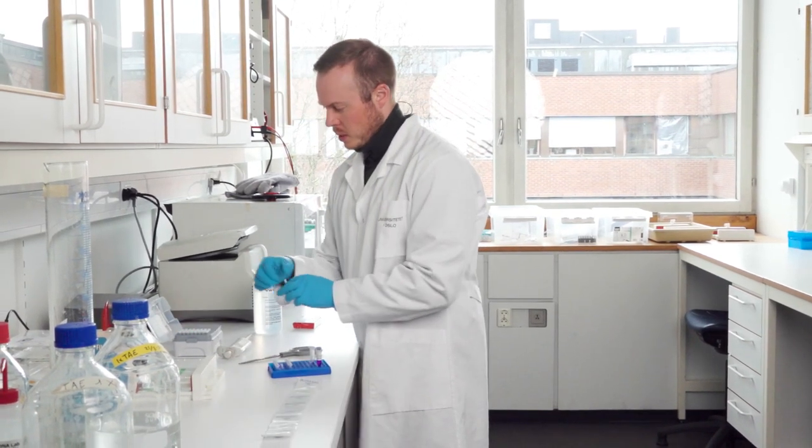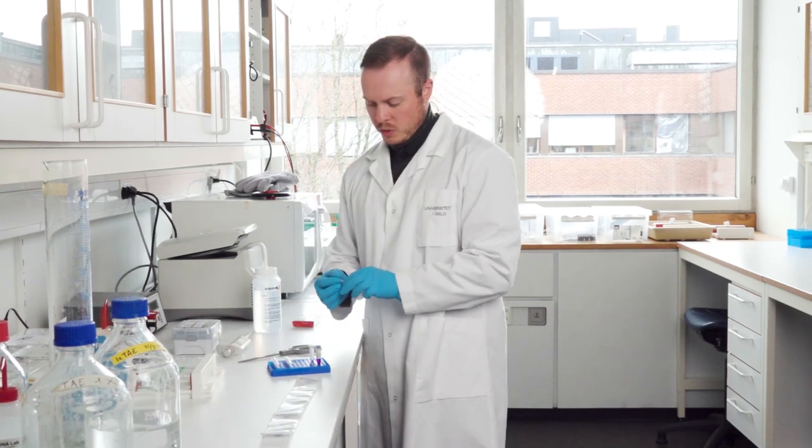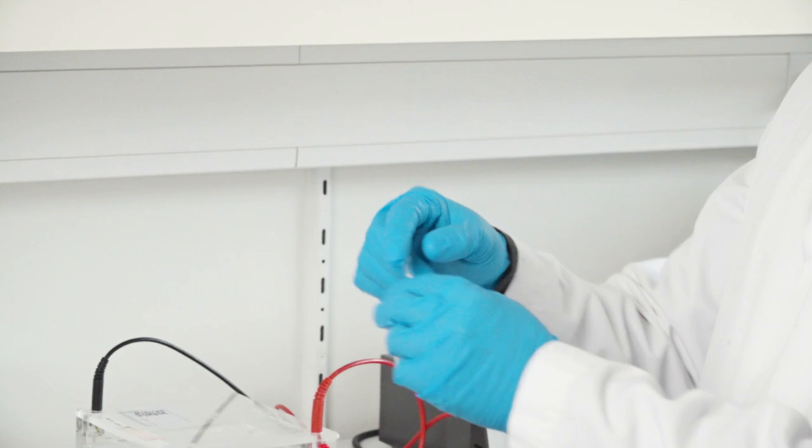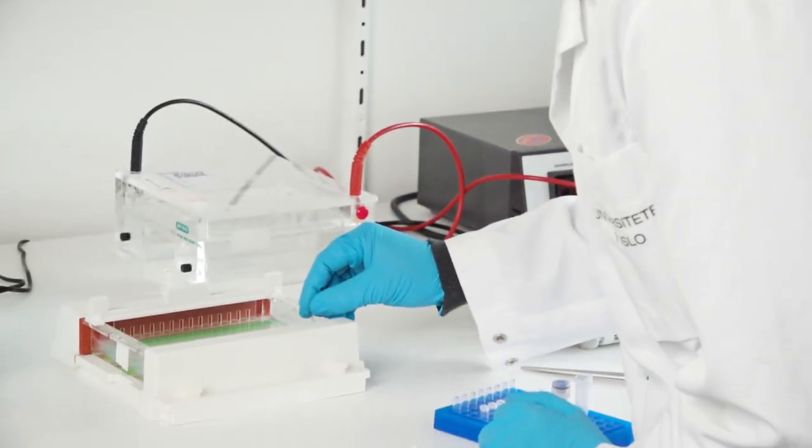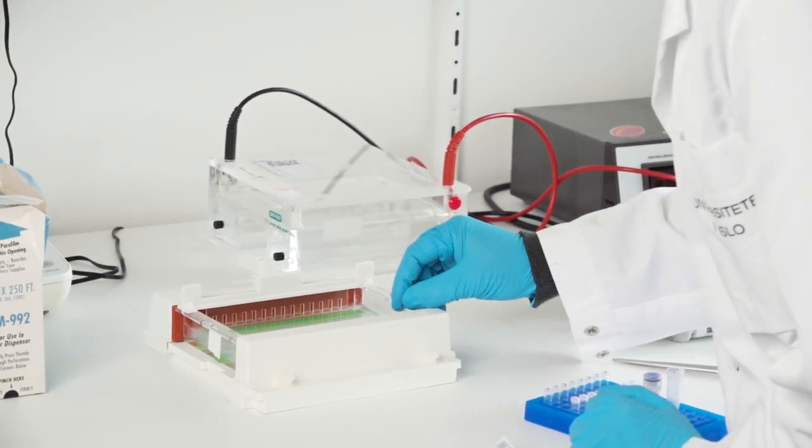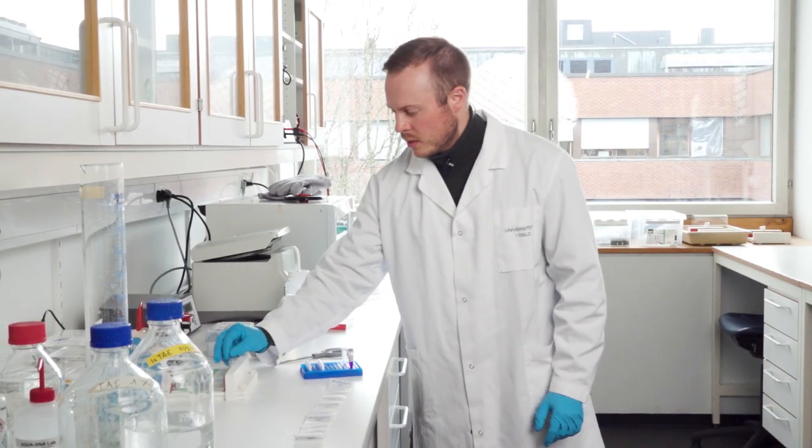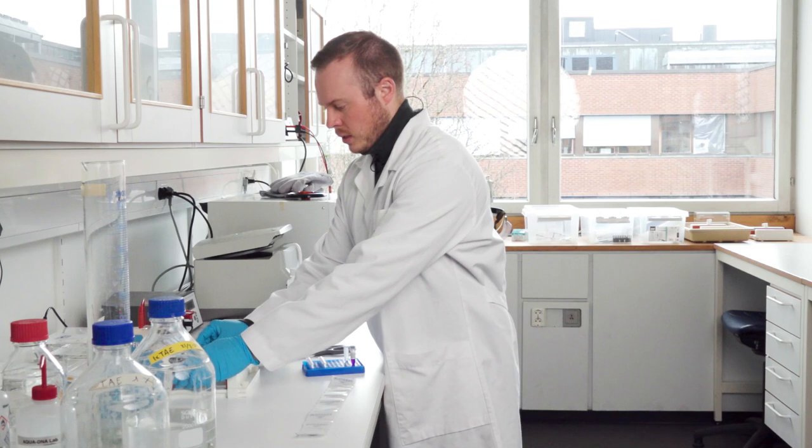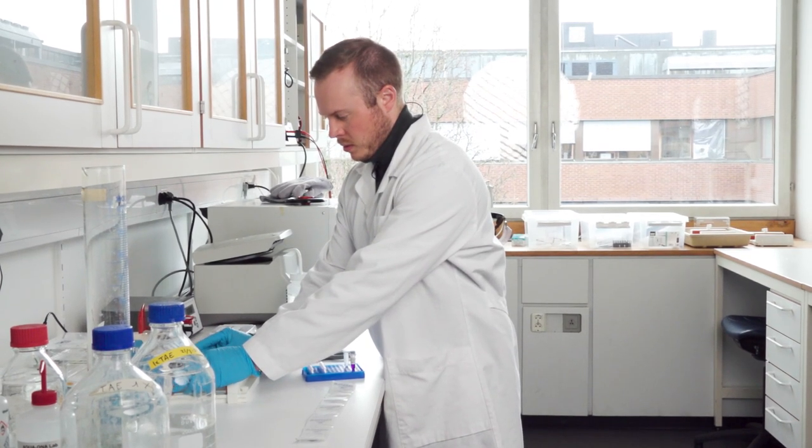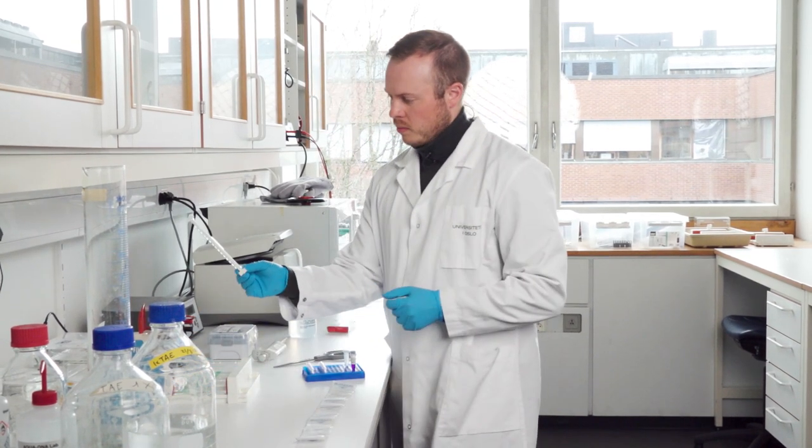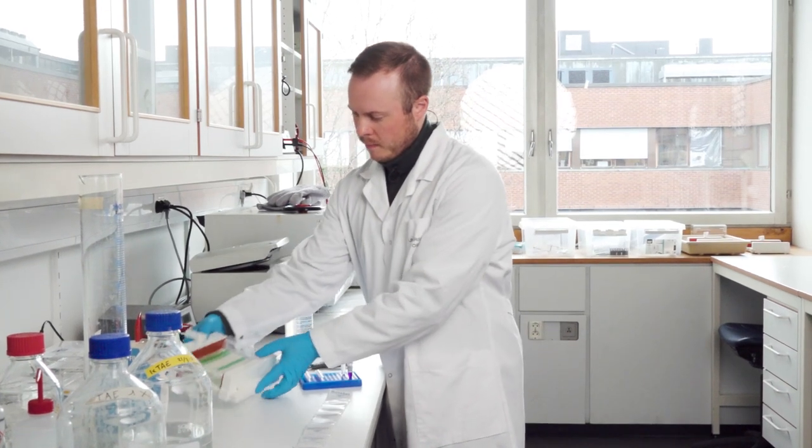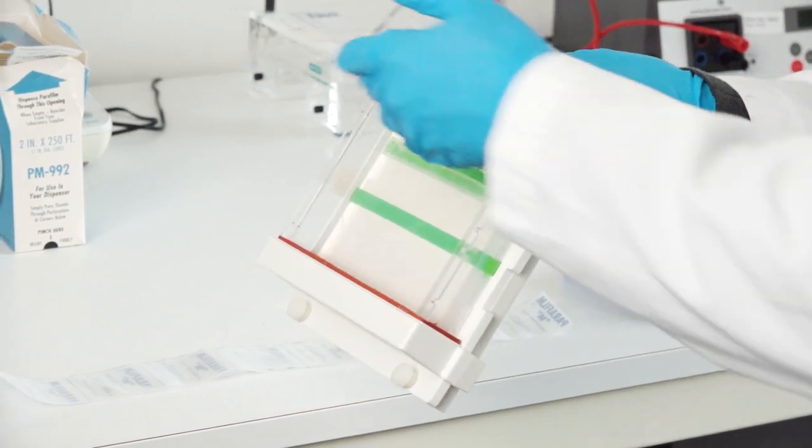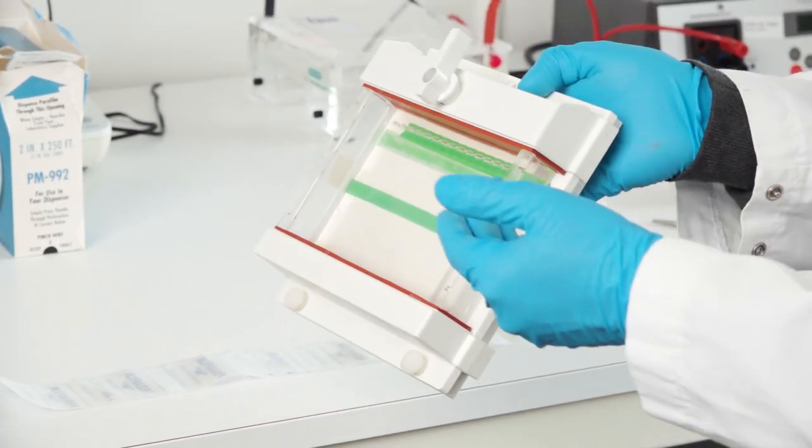Then I take a pipette tip and then I use not the pointy end of the pipette tip but the blunt end of the pipette tip to check the gel. And now I feel that it's hard. It's not a lot of pressure that's needed, just a little bit. Then I can open and take out the teeth from the mold and we now have a very clear row of wells that we can put our samples in.